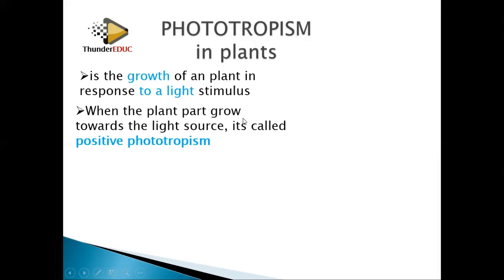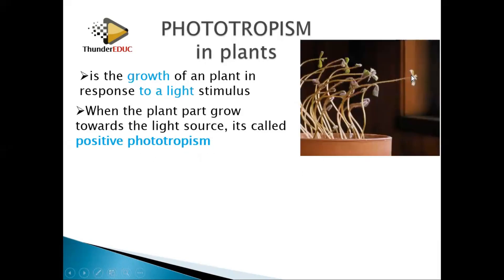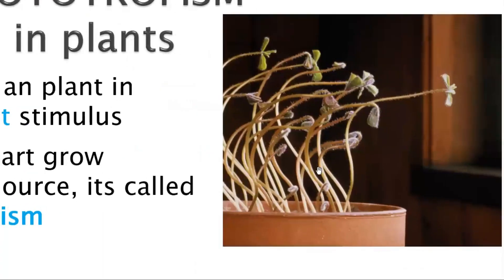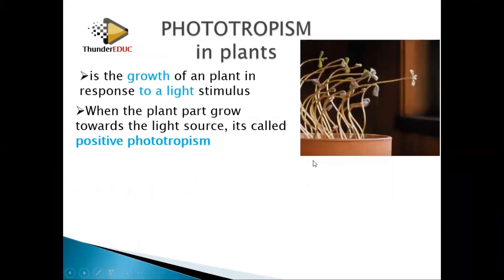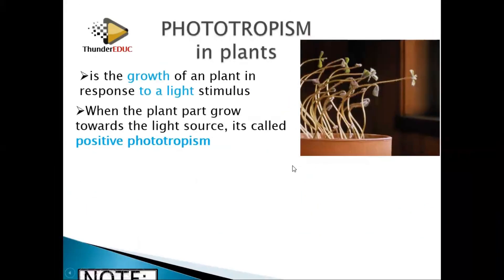When the plant part grows towards the source of light, it is called positive phototropism. Here is an example: you have the source of light, and the plant grows towards it — you can see it very clearly that it's growing towards the source of light. So we say that this is positive phototropism.